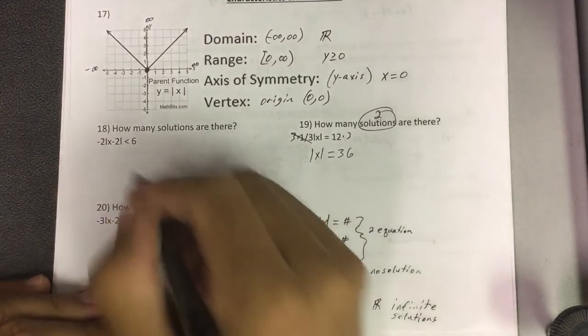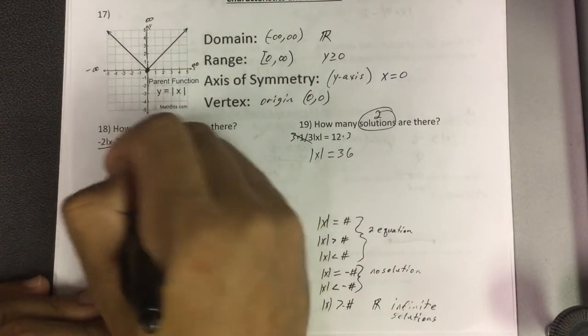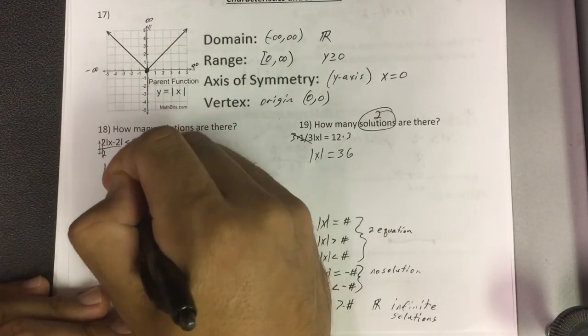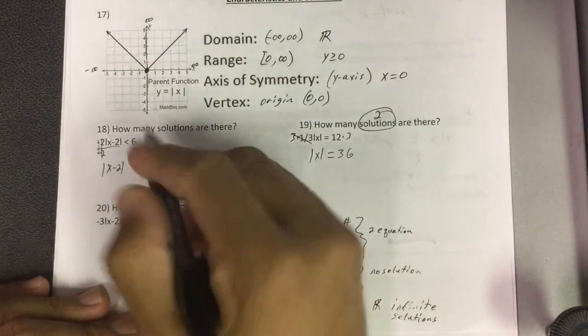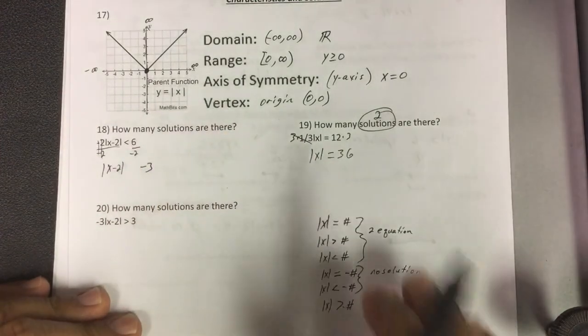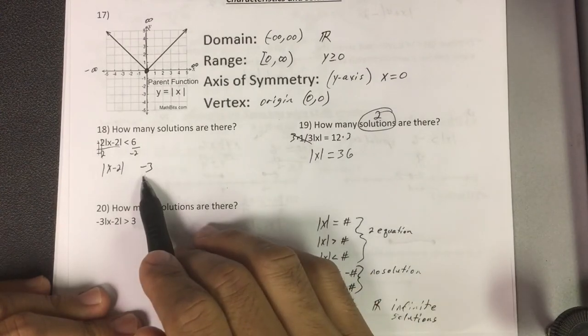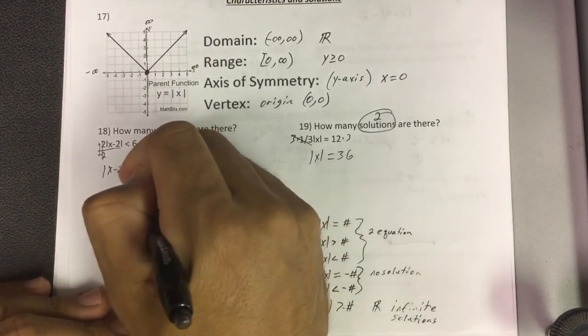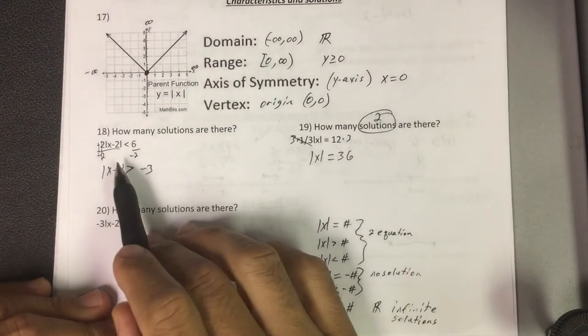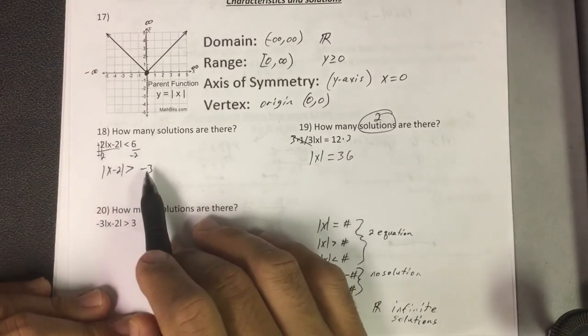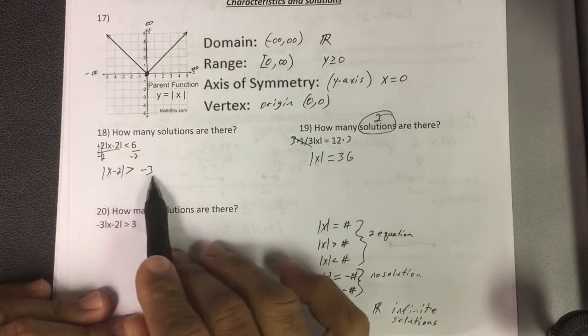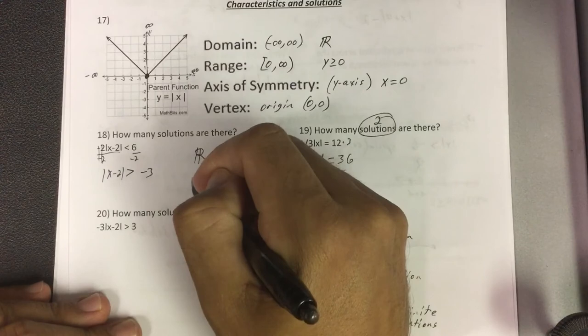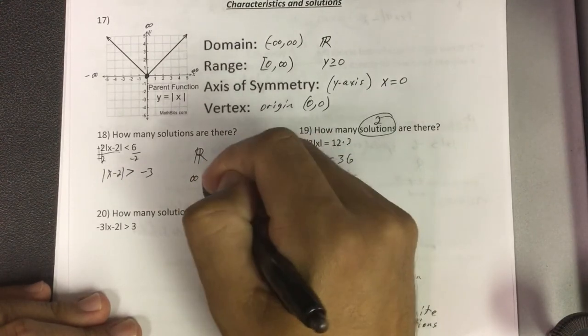On this one, I've got to get rid of this negative 2 first. If I divide by negative 2, divide by negative 2, notice that cancels. I get absolute value of x minus 2 and negative 3. That tells me I'm going to have one of these special cases because I've got a negative 3 here. What they're also checking is, do you know your rules? The sign should change when I divide by a negative number. So when the sign changes and I say, when is this greater than a negative number? Always. All real or infinite solutions. Infinite solutions.